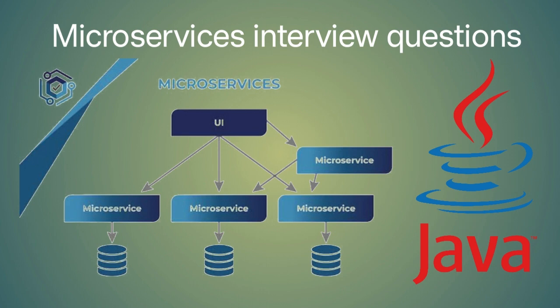How do you ensure the security of microservices and their communication channels? To ensure security, you can use techniques like encryption, authentication, and authorization. You can also use API gateways to manage access control and rate limiting.